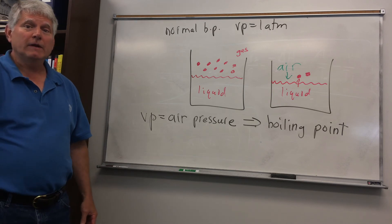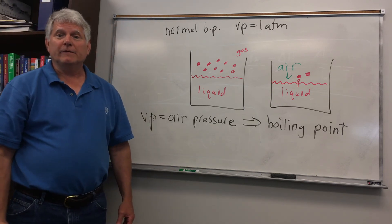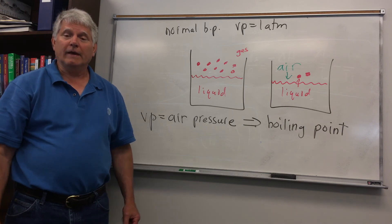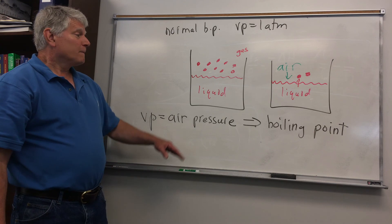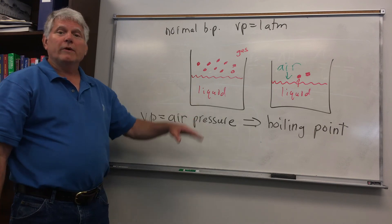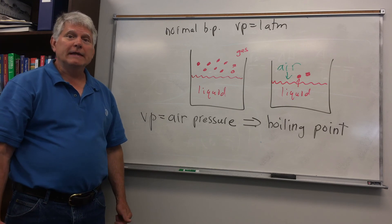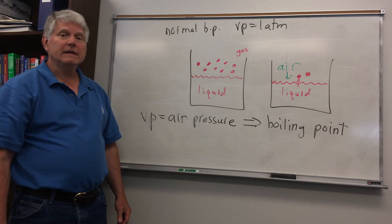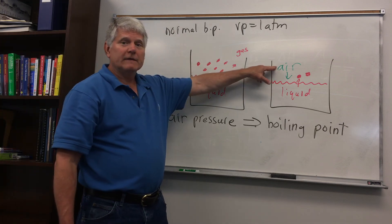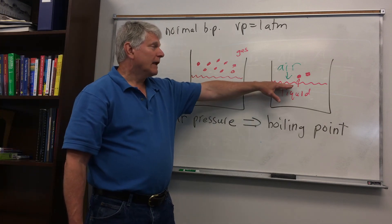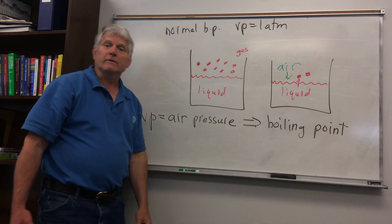If we go to the top of a mountain, the air pressure is slightly less than one atmosphere. At the top of Mount Everest, it's a lot less than one atmosphere. So the boiling point of water on top of a mountain will be lower in temperature than at sea level, because the air pressure is less and the vapor pressure needed to reach the air pressure is lower — so it will boil at a lower temperature.